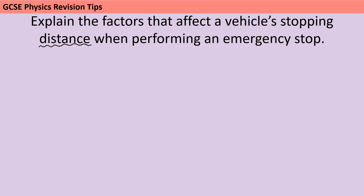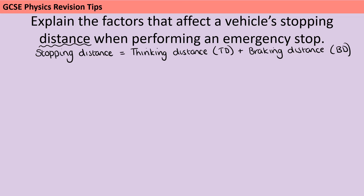Now as I alluded to, there are two components to stopping distance. I'm going to start my answer by explicitly saying that stopping distance is made up of thinking distance — the distance travelled by the vehicle in the time between deciding to brake and the braking force actually being applied — and then also the braking distance, which is how far the vehicle goes while you're braking. By putting the abbreviations TD and BD after them, my examiner knows what I mean and I can answer the rest of the question without writing those words out in full, saving a little bit of time.